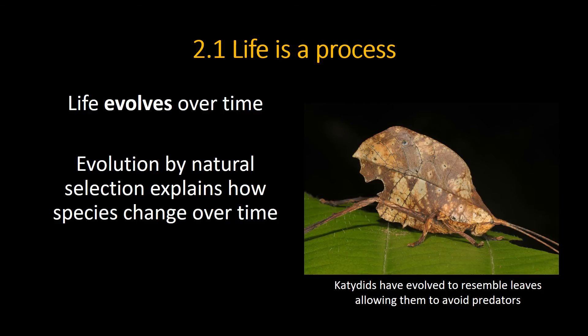And that's what Darwin showed. Life evolves through evolution by natural selection, which allows species to change over time. This katydid — a relative of the grasshopper — has evolved to look like a leaf so that it can avoid predators. The more it looks like a leaf, the more likely it is to survive, and the more likely it is to reproduce. Over time, all these favorable changes accumulate in a population. So basically, anywhere you go in the universe or on Earth, life will evolve over time — very rapidly or very slowly, like those horseshoe crabs.